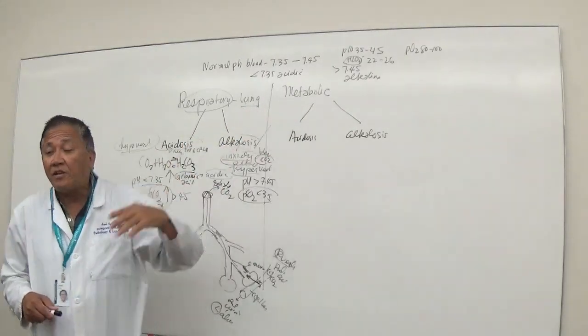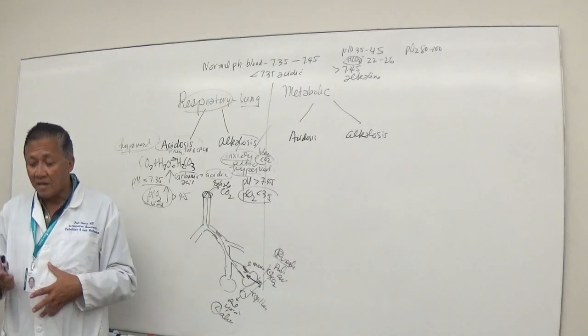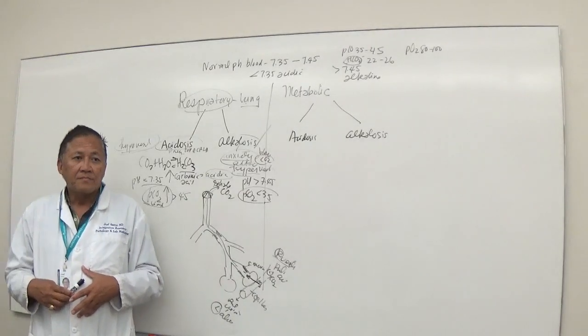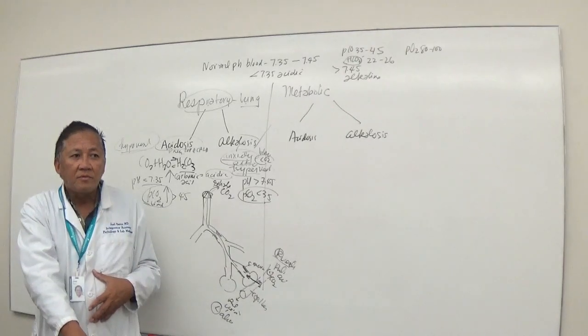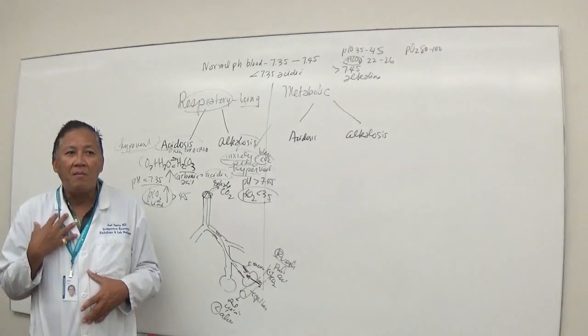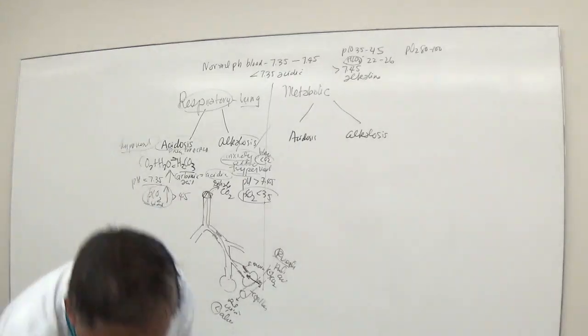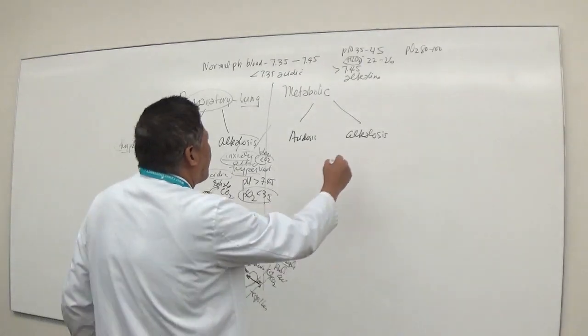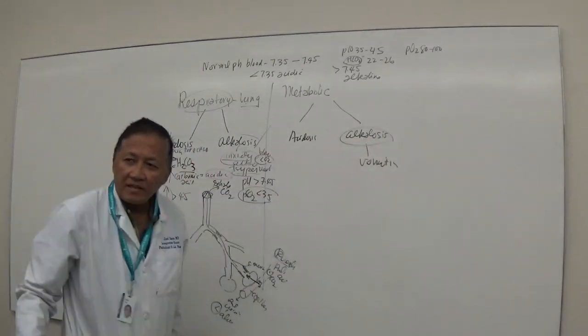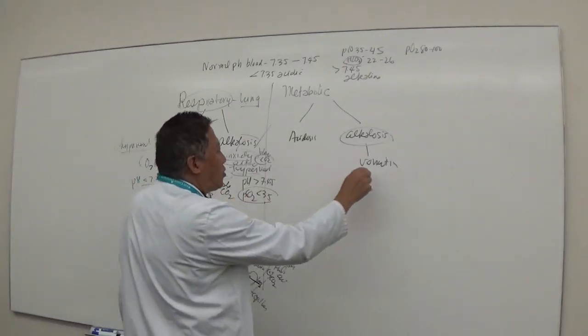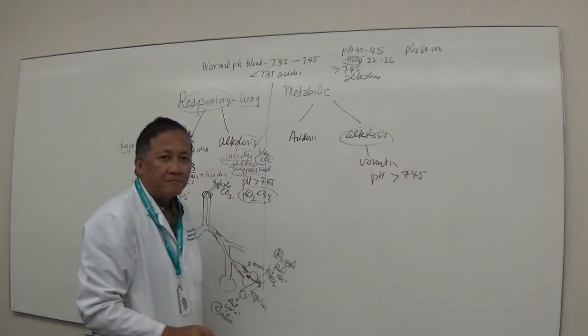What about metabolic acidosis? Anything that does not involve the lung. I'll give you an example: what is found in your stomach? Hydrochloric acid, which is acid. Let's pretend it is the acid and I vomit. Where is the acid now? On the floor. So what happens to me? Do I become alkaline or acidic? Alkaline. So what is vomiting? Therefore, metabolic alkalosis.